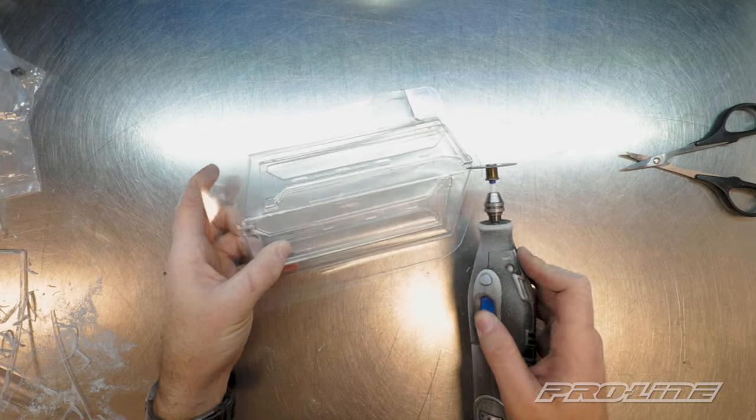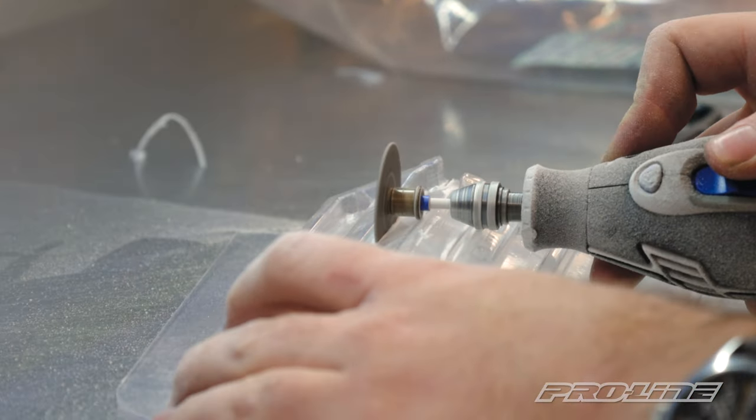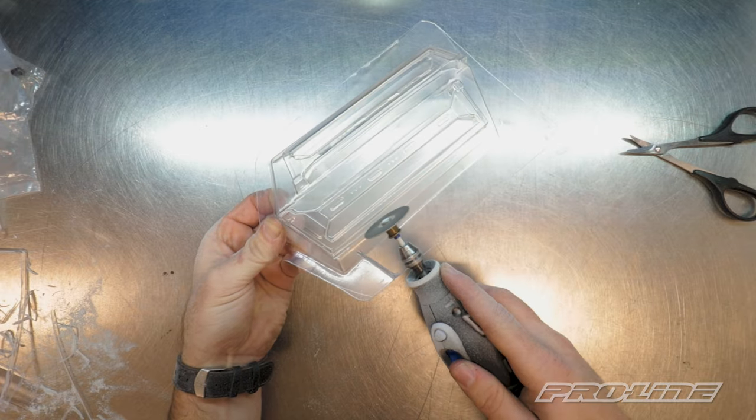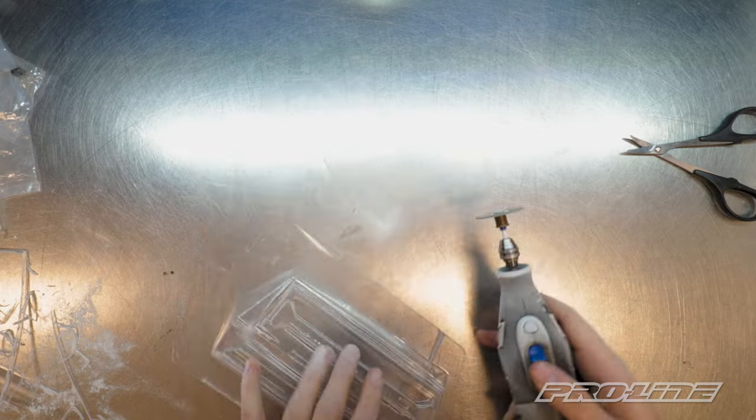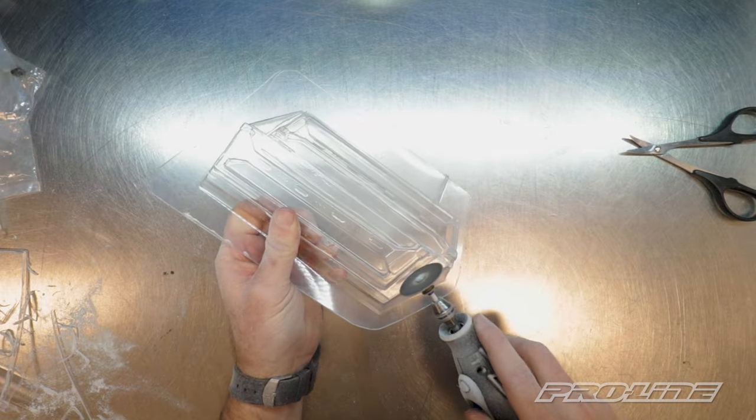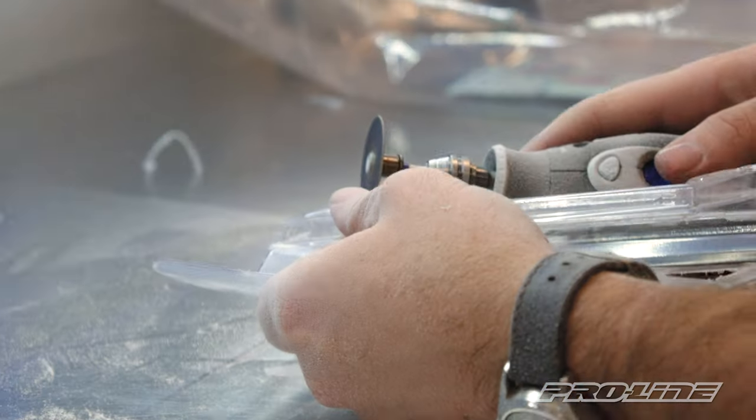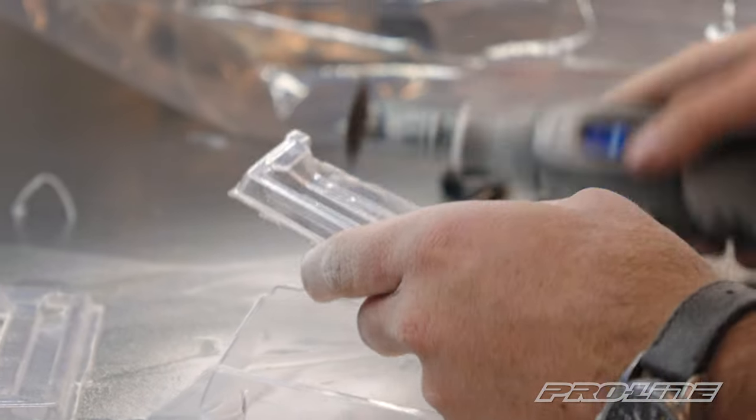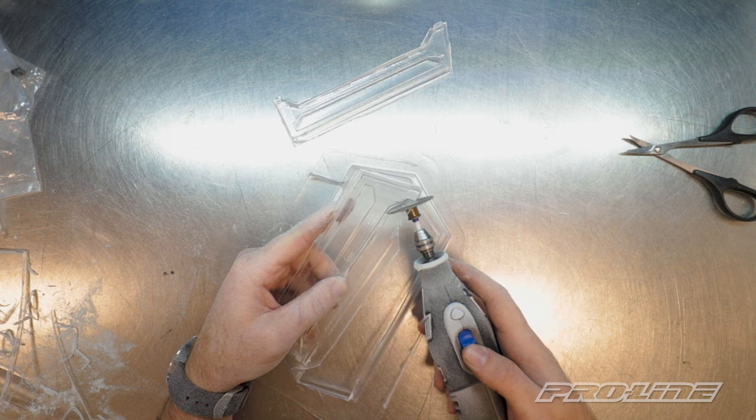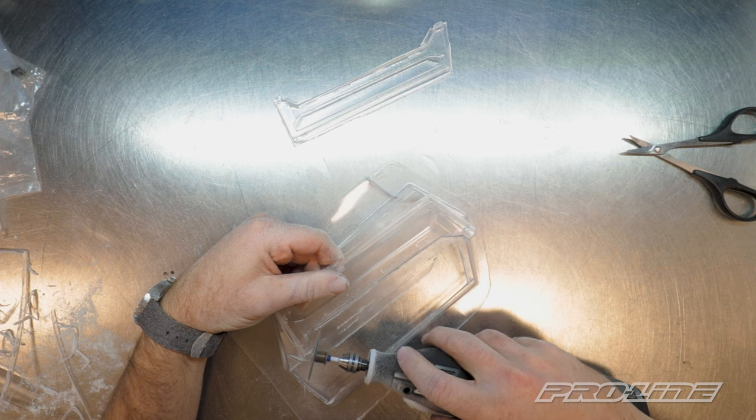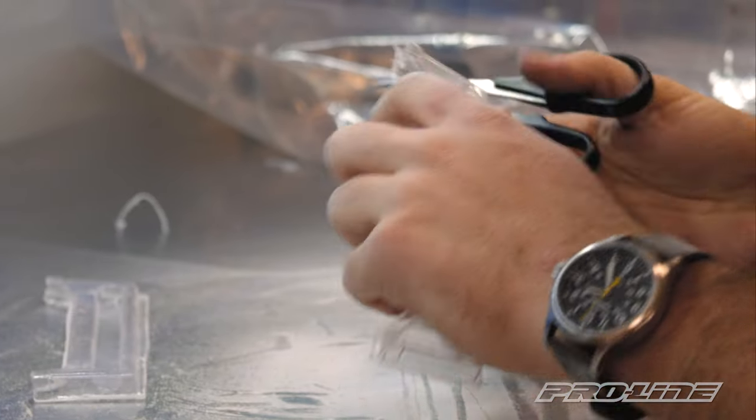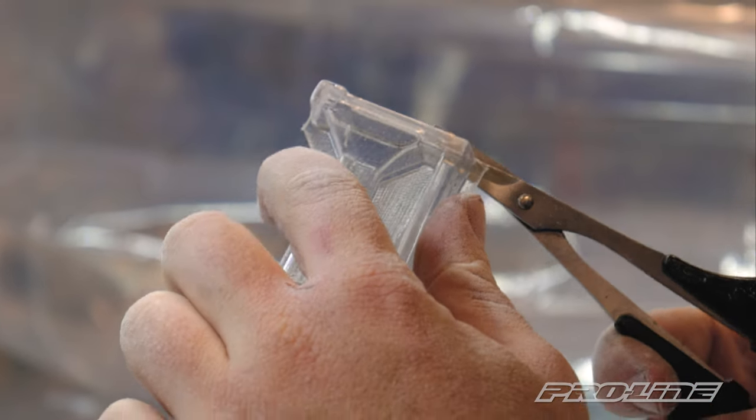There's the first half and the second. Now that we got the bulk of the material removed with our rotary tool, we're going to fold up these edges and clean them up a little bit with our polycarbonate shears.